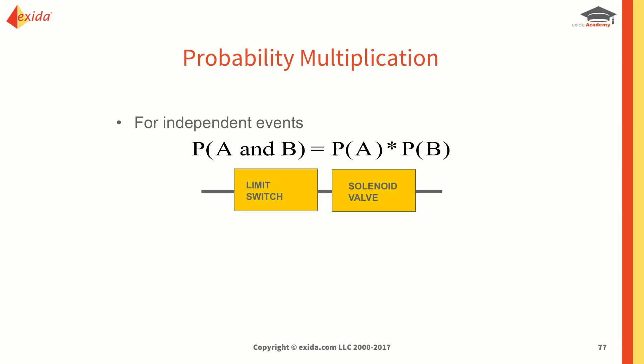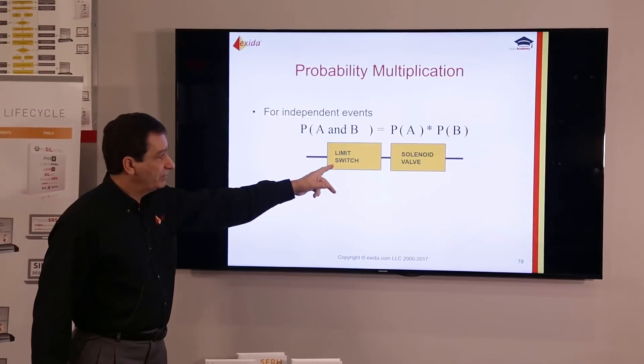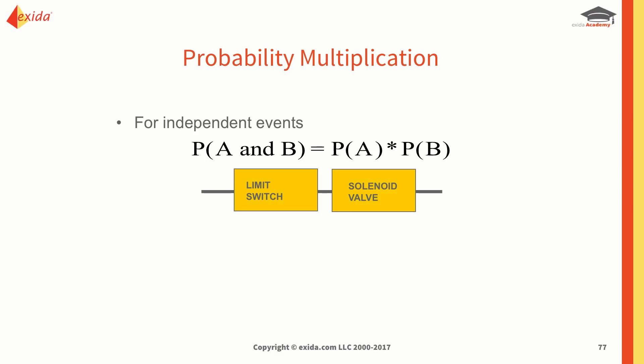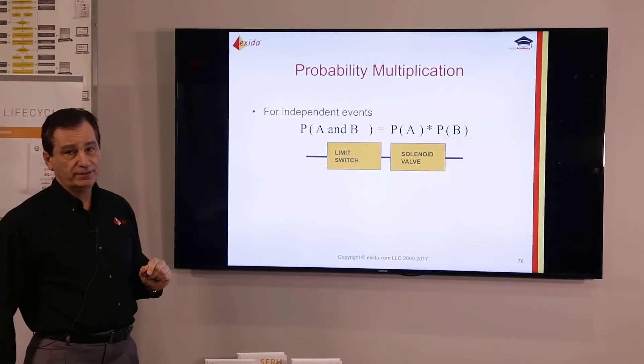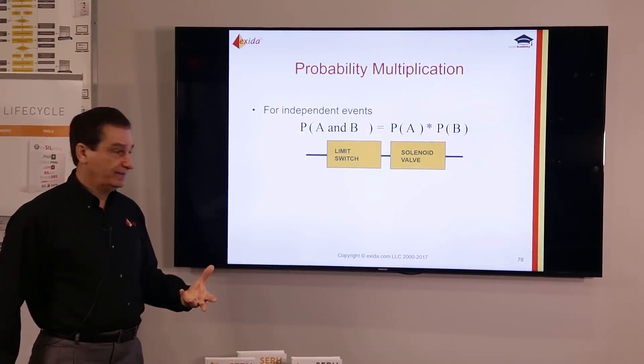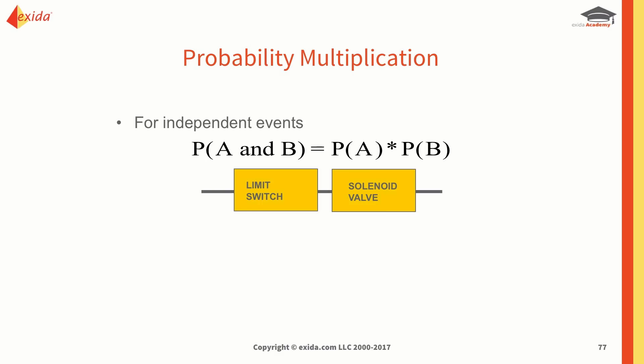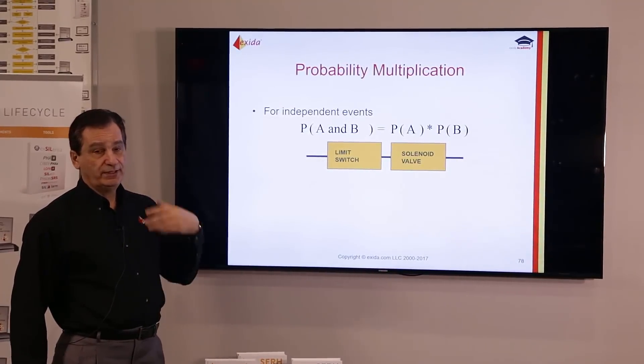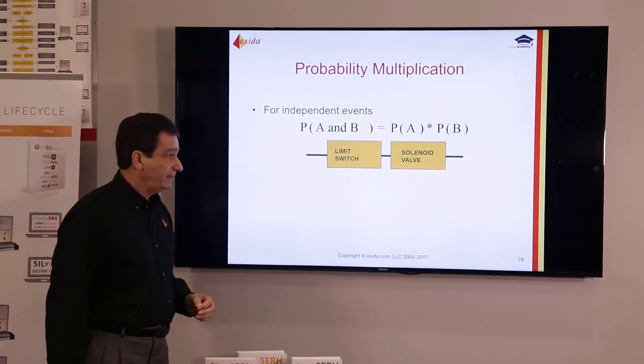Let's look at an example. If we have a limit switch and a solenoid valve, in order for this system to work both the limit switch AND the solenoid valve need to work — that's the logical AND operator. So if the probability of success for the limit switch is P(A) and for the solenoid is P(B), then the probability of A and B is going to be P(A) times P(B). For failures, either the limit switch OR the solenoid valve could fail, so we're talking about an OR.